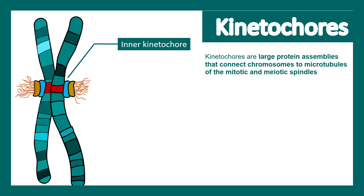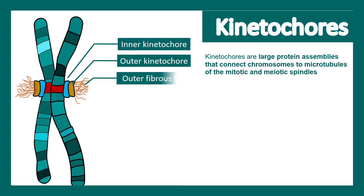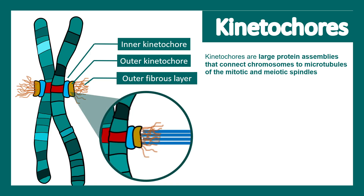When the tension is proper, only then does the cell divide to pull chromosomes apart. There are three portions of the kinetochore: the inner kinetochore, the outer kinetochore, and the fibrous layer. The fibrous layer guides microtubules towards the kinetochore region and allows their docking. Many proteins and kinases associated with this region ensure that proper tension is sensed before the chromosomes can segregate.